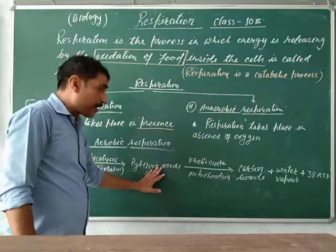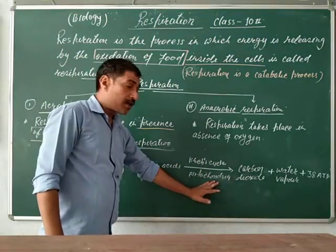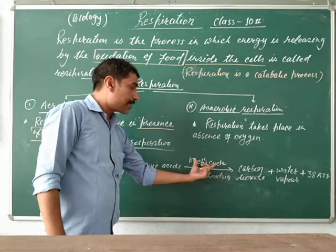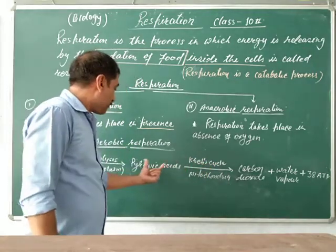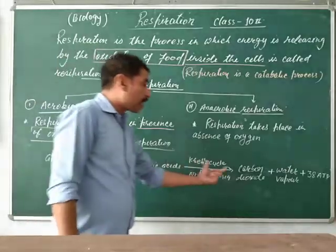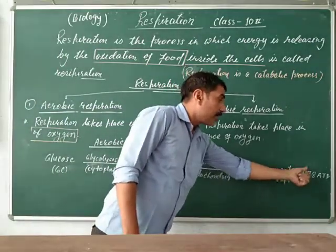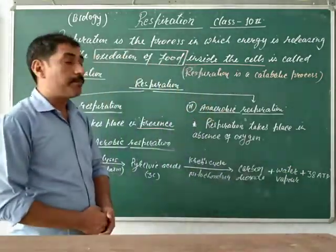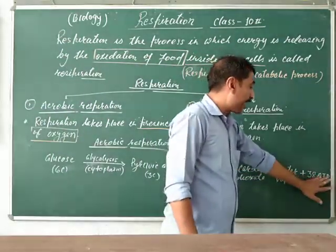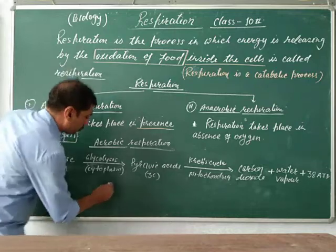After glycolysis, the products enter into the mitochondria, where the Krebs cycle takes place. The Krebs cycle breaks down the products into carbon dioxide, water vapor, plus 38 ATP molecules of energy. ATP means adenosine triphosphate.